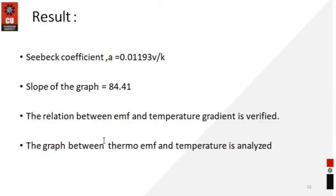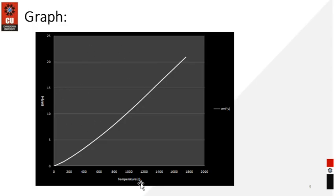Here you can see the result: the Seebeck coefficient α equals 0.01193 volt per kelvin. The slope of the graph is defined and the relation between the EMF and the temperature gradient is already verified. This graph shows the variations between EMF and temperature. This is all about the calculation of the thermocouple Seebeck effect. In a thermocouple there are three effects: the Peltier effect, the Thomson effect, and the Seebeck effect. If you want to know how to plot the graph, I will give the link in my description box. Please subscribe to my channel — thank you for watching.